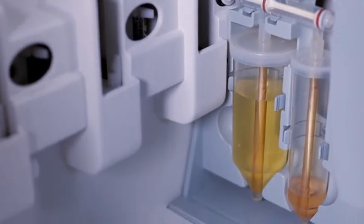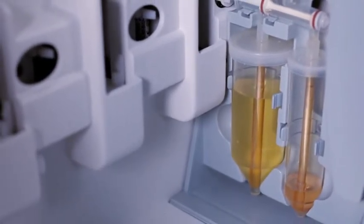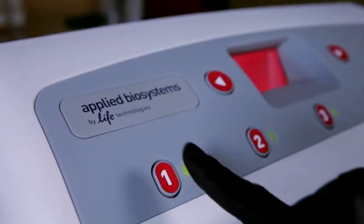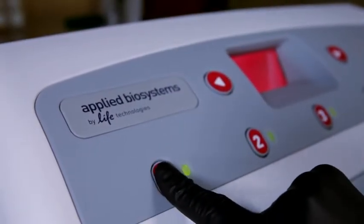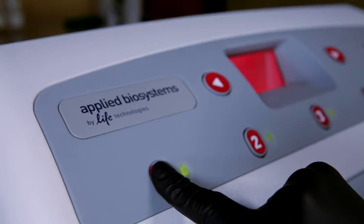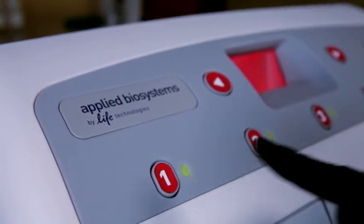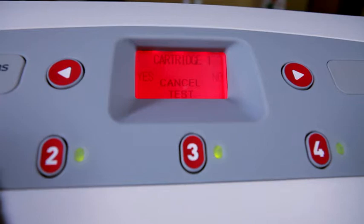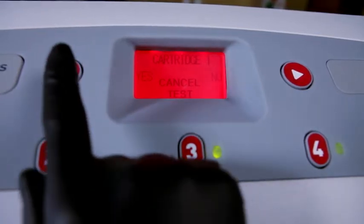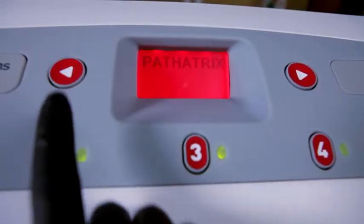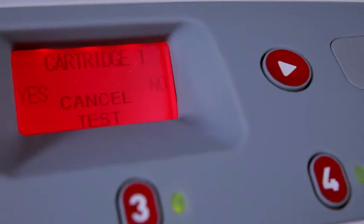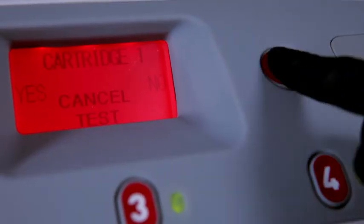When the capture cycle is done, the wash cycle will start automatically. If you need to stop the capture cycle to add beads or an elution buffer, press and hold the number button for that cartridge for five seconds. The display will ask if you want to cancel. Press the left arrow for yes, which will stop the run and let you add beads or buffer. Or push the right arrow for no, and the run will continue.